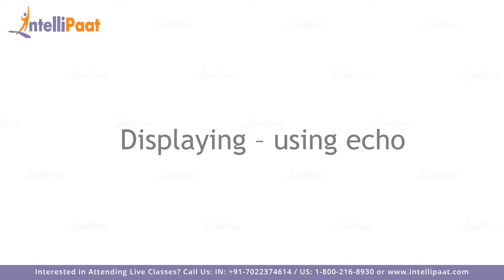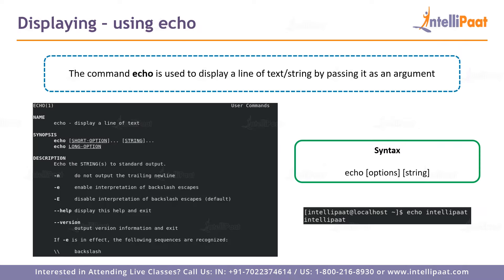Now we are going to see the echo command, one of the most important commands to know. Echo is used to display a line of text or string by passing it as an argument. For example, 'echo Intellipaat' prints that text. It basically displays a line of text.